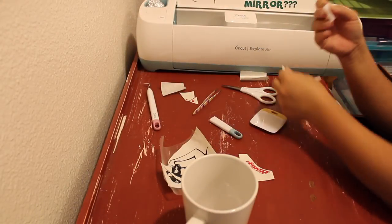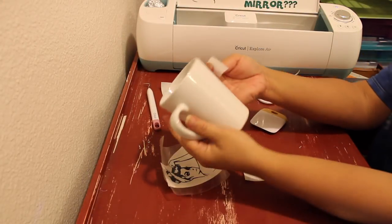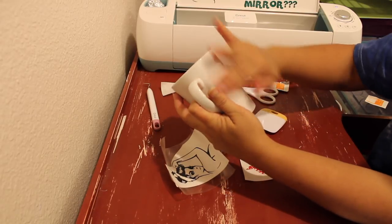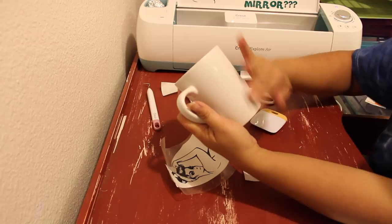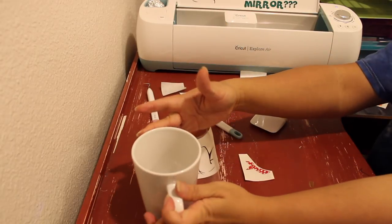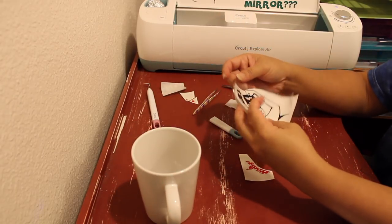So first, what I'm going to do is clean the cup with rubbing alcohol to make sure there is no dirt or oil when we place our vinyl. I'm going to let that dry. There's already transfer tape on the vinyl, so I'm going to burnish and gently remove the backing of the vinyl.